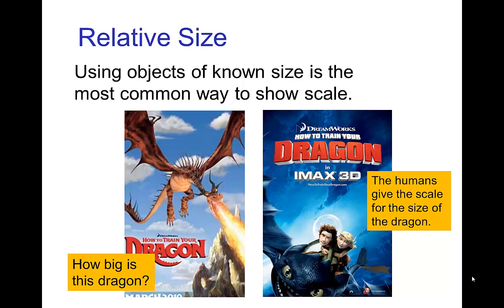On the other hand, the poster on the right — because we see the humans sitting on the back of the dragon — we have a sense that the dragon is large compared to people. Even though these are children, it's still quite a large animal because we know the size of humans.